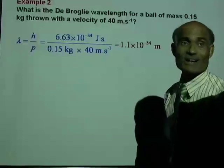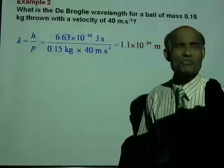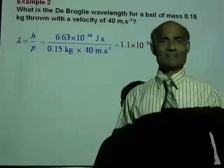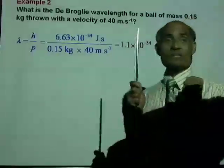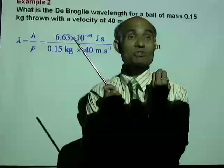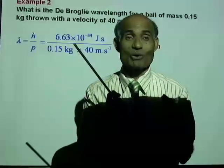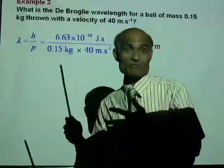It is 1.1 times 10 to the negative 34 meter. How big a wavelength is that? Well, if you measure my wavelength, it will be much shorter because my mass is greater than the mass of that ball, when I move with a certain velocity.